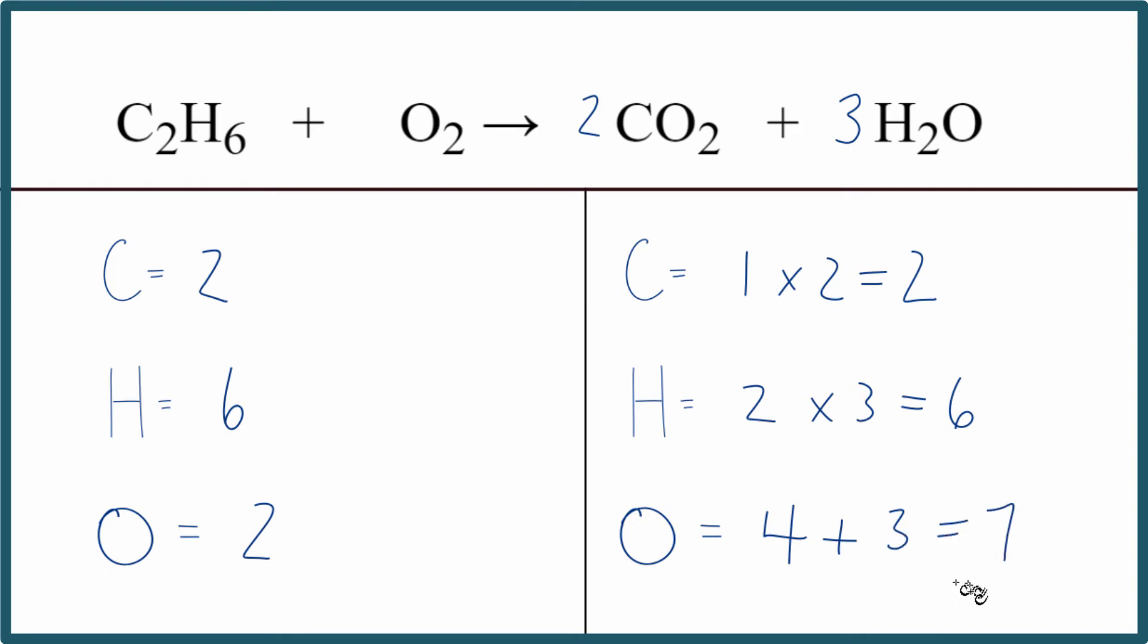And this is kind of complicated. How do we balance the seven and the two? When you're dealing with combustion reactions and you're dealing with oxygen, you can actually just use a fraction to balance the equation. So two times something is going to give me seven, and that would balance the equation.